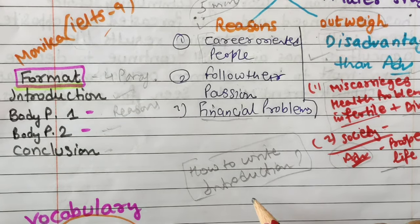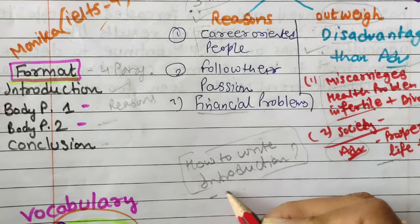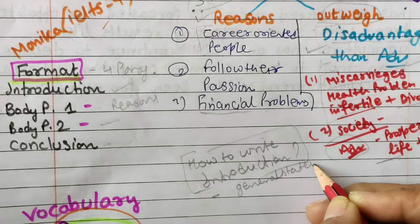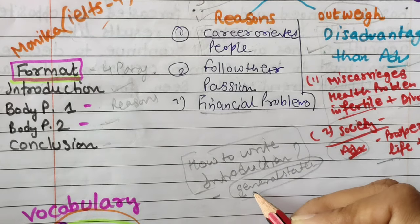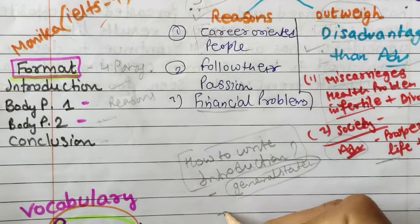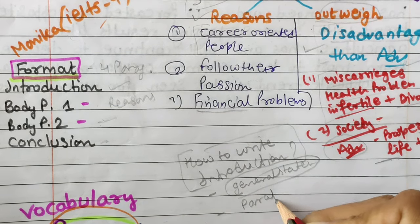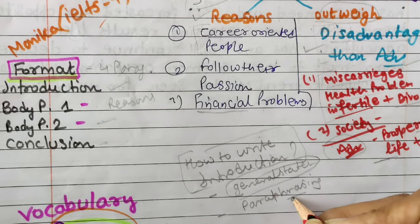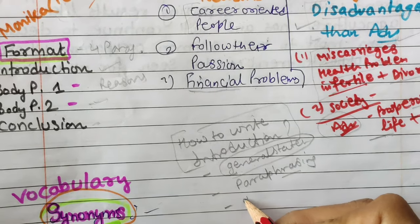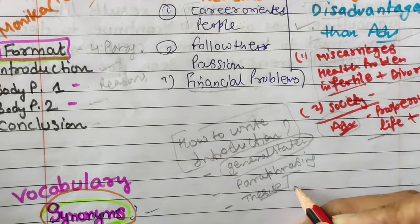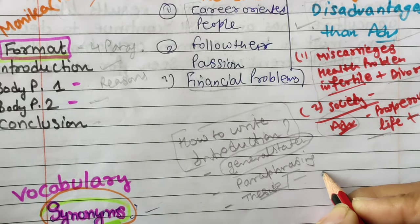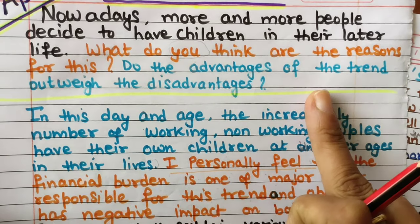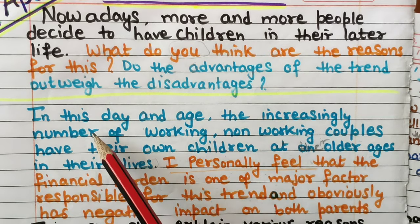For writing the introduction, use the three-sentence formula. First, a general statement about the main topic — if you can't think of one, start directly with paraphrasing the question statement. Second, paraphrase the question statement using synonyms and a different sentence structure. Third, write a thesis or outline sentence stating what you will discuss in the upcoming paragraphs along with your opinion.